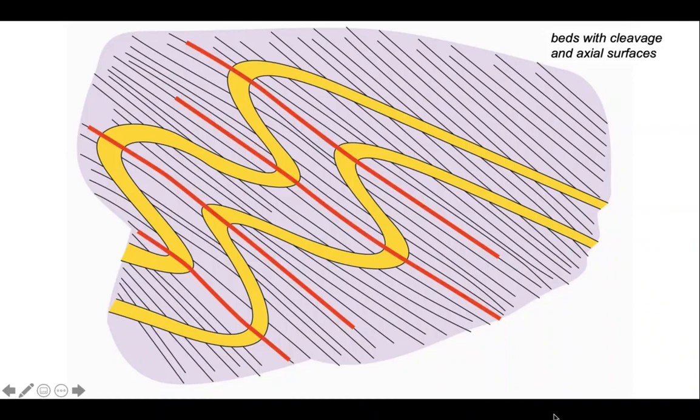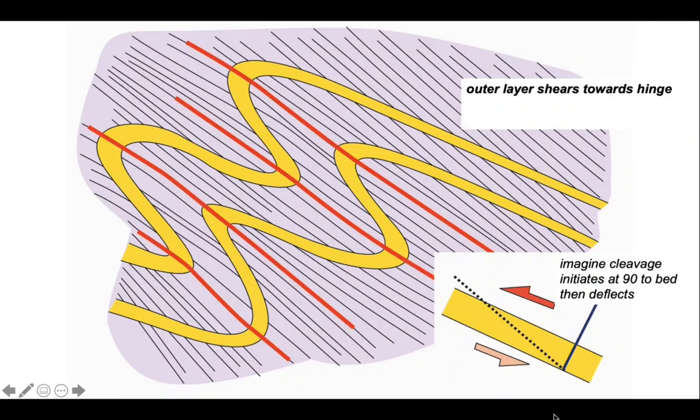To set this up, we'll imagine that cleavage betrays a shear sense on the limbs of the fold. It's not how the cleavage actually forms, but it's a useful visualization. Let's imagine the cleavage initiates at 90 degrees to bedding and then with folding deflects. The sense of deflection gives a shear sense which varies around the fold structure.